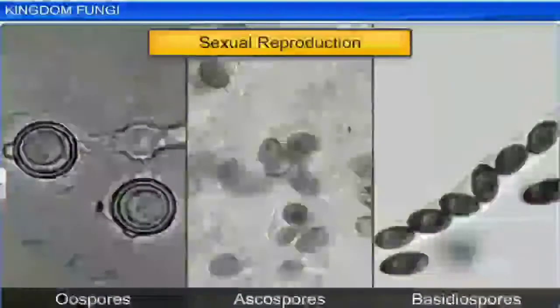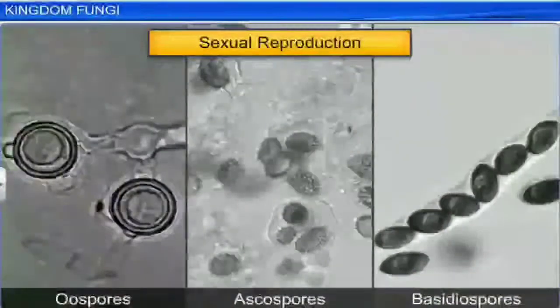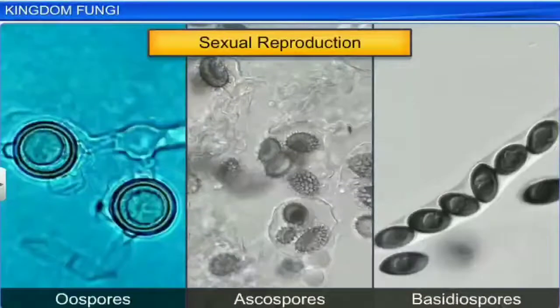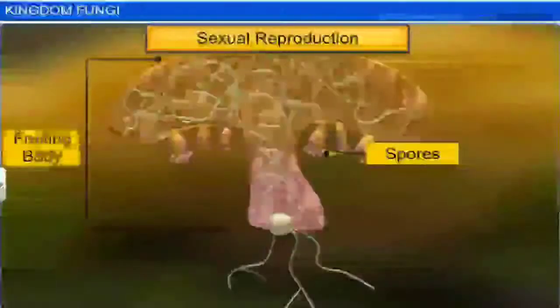They also reproduce sexually by either Oospores, Ascospores, or Basidiospores. All these spores are produced in structures called fruiting bodies.